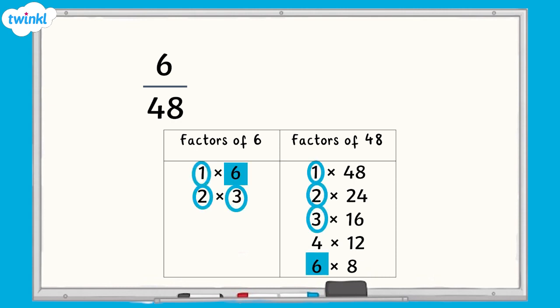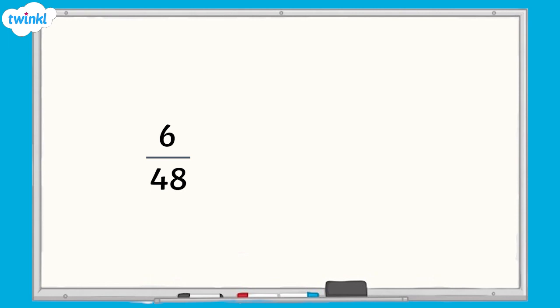The next step is to divide the numerator and the denominator by the highest common factor. 6 divided by 6 equals 1 and 48 divided by 6 equals 8. So 6 48ths, in its simplest form, is 1 eighth.